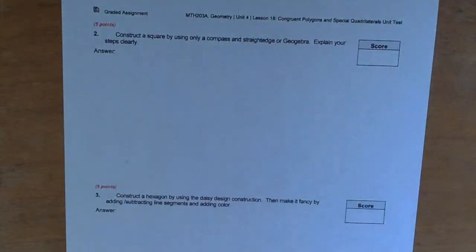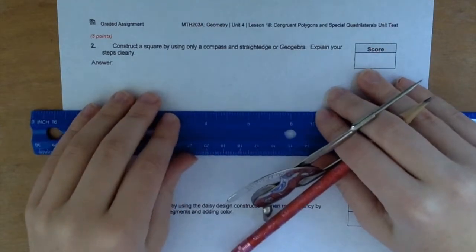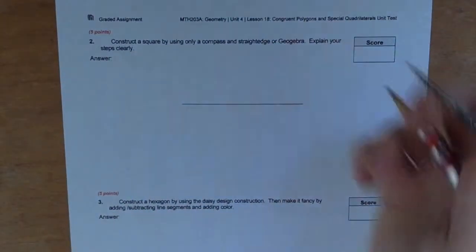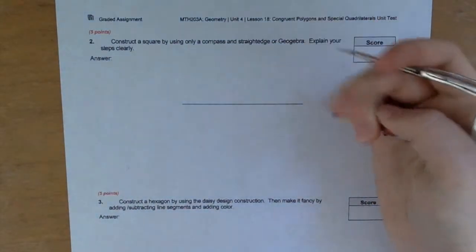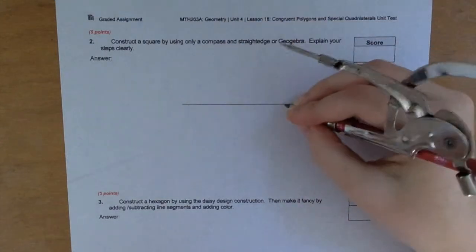So I'll be using a straight edge and a compass. Here's my line that I'm going to start out with, and then we'll need two points on the line. So let's say right about here.